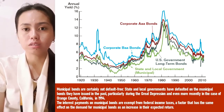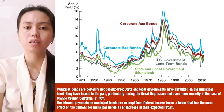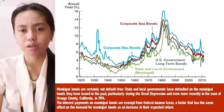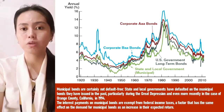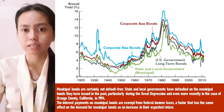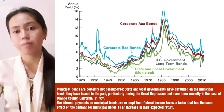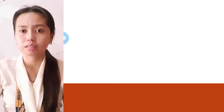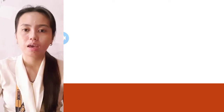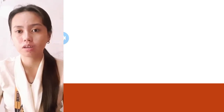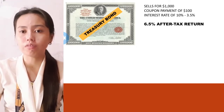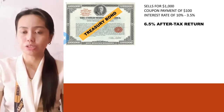Returning to figure 1 on the default risk, we are still left with the question of why municipal bonds have lower interest rates than the Treasury bond when they are not as liquid. The explanation lies in the fact that interest rates on municipal bonds are exempt from federal income taxes — a factor that has the same effect on demand for municipal bonds as an increase in their expected return. For example, assume you are in a 35% income tax bracket and invest in a Treasury bond that sells for $1,000 with a coupon payment of $100 and a 10% interest rate.